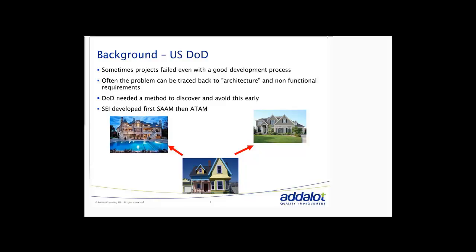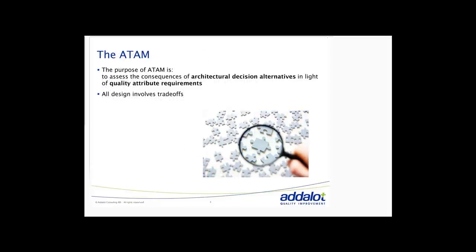So ATAM is a way to evaluate what is possible to do within an architecture, what is good with it, what is bad with it, and what we can expect from it. The purpose of ATAM is to assess the consequences of architectural decision alternatives in light of the quality attribute requirements — such as safety, performance, and all the other abilities that determine the architecture.